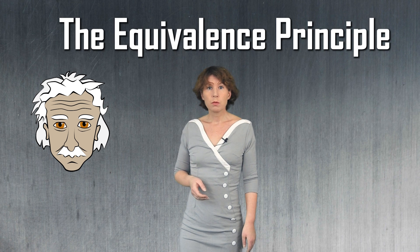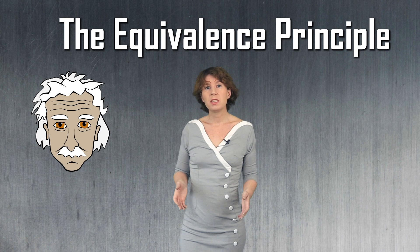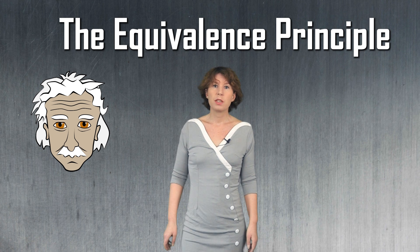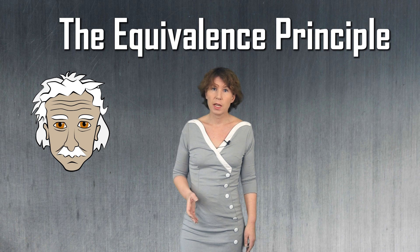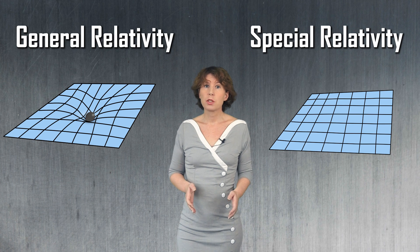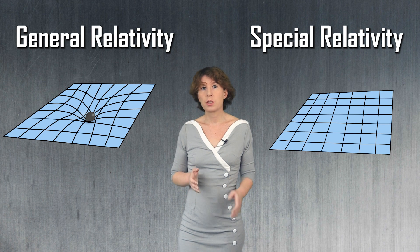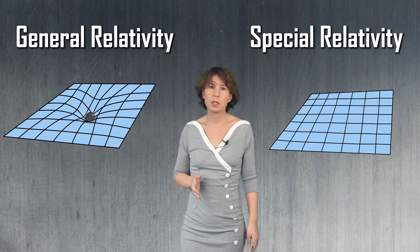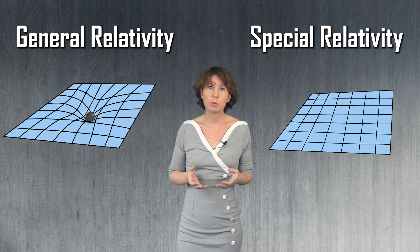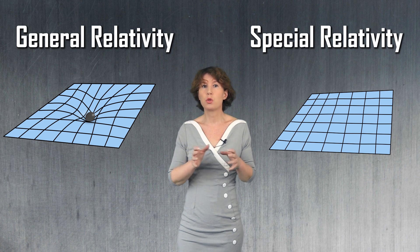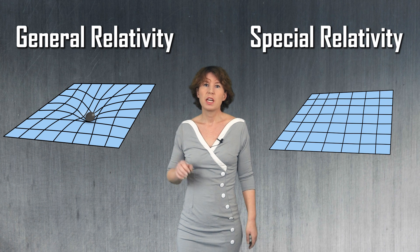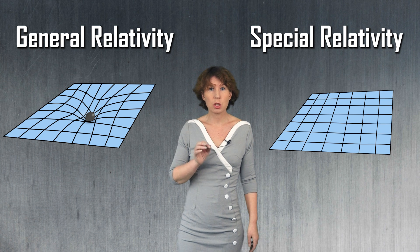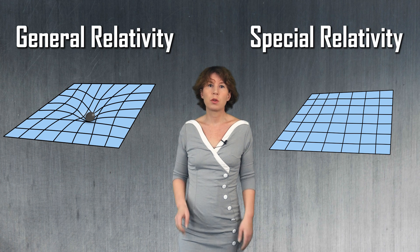Einstein's theory of general relativity rests on the equivalence principle, which says that locally the effects of gravity are the same as the effects of acceleration in flat space. Locally here roughly means nearby. Acceleration in flat space is described by Einstein's theory of special relativity. So with the equivalence principle you can generalize special relativity to general relativity. Special relativity is the special case in which space-time is flat and there is no gravity.